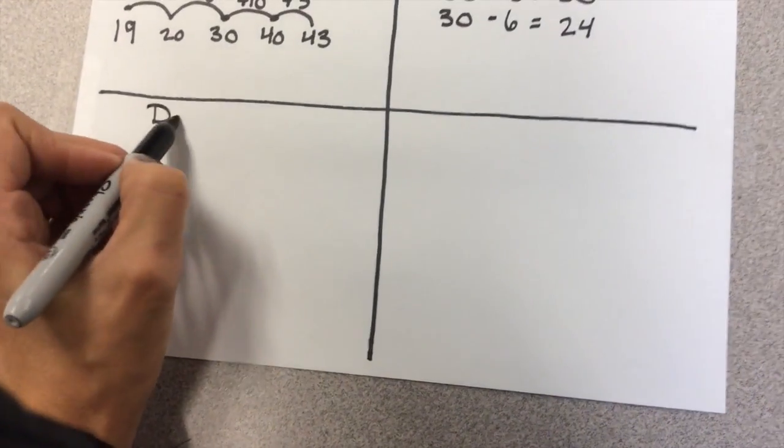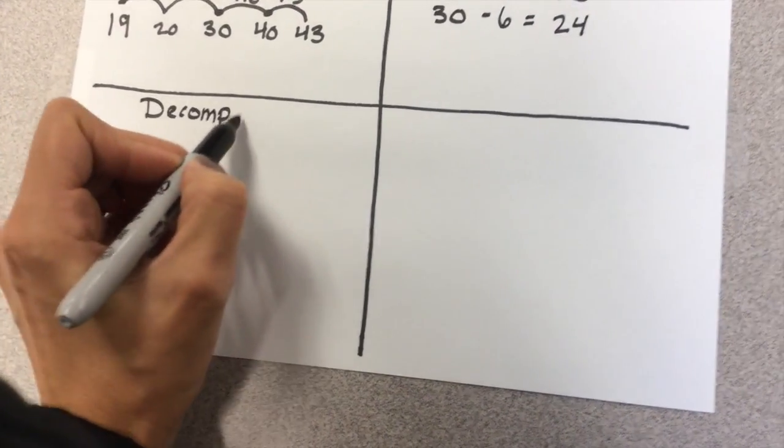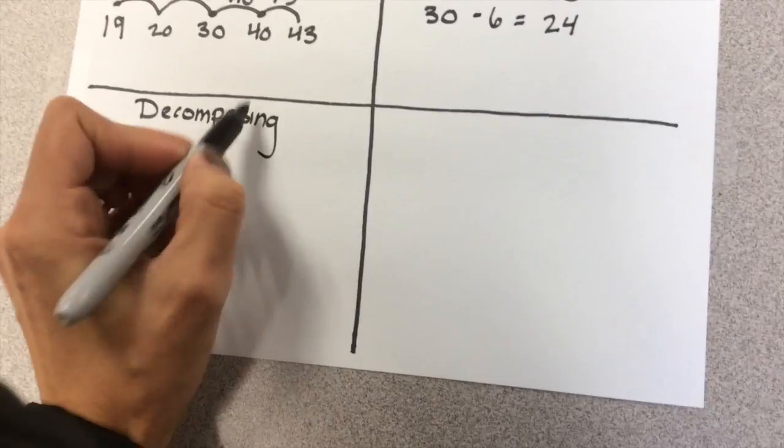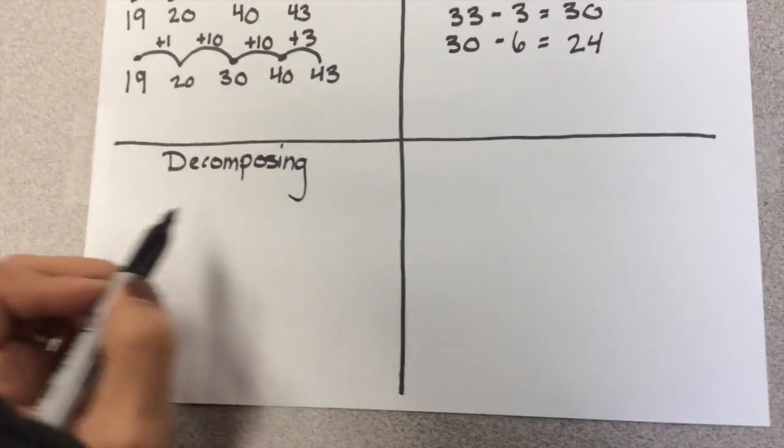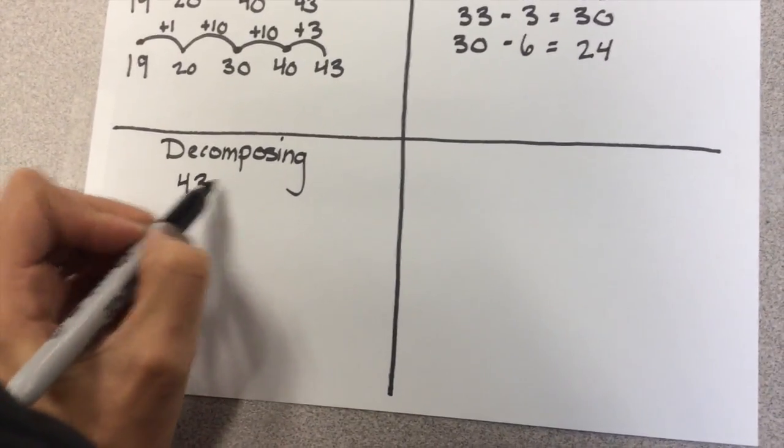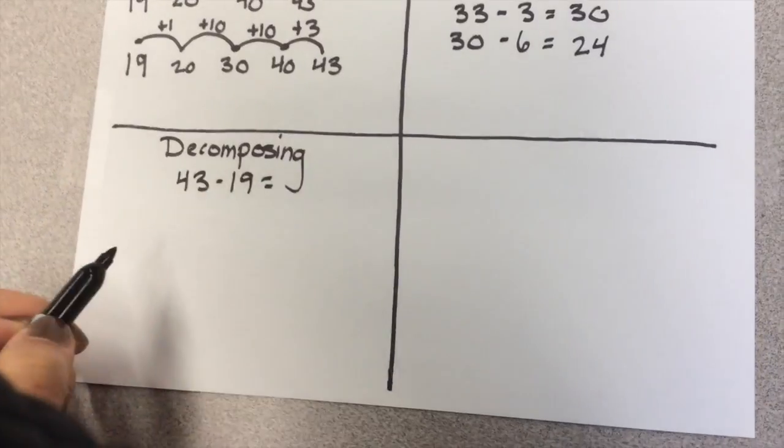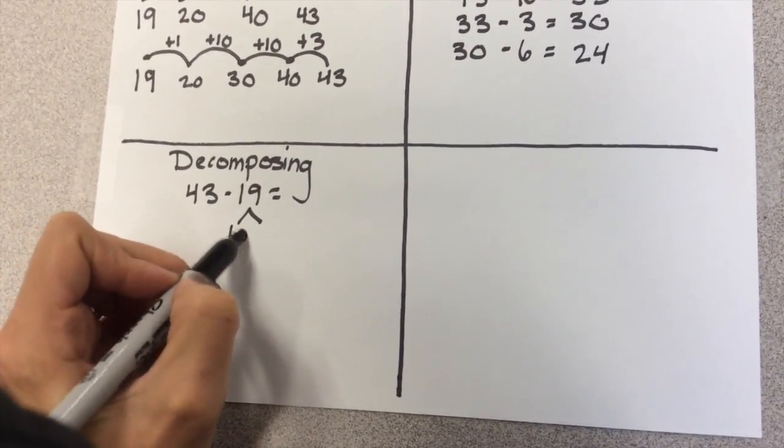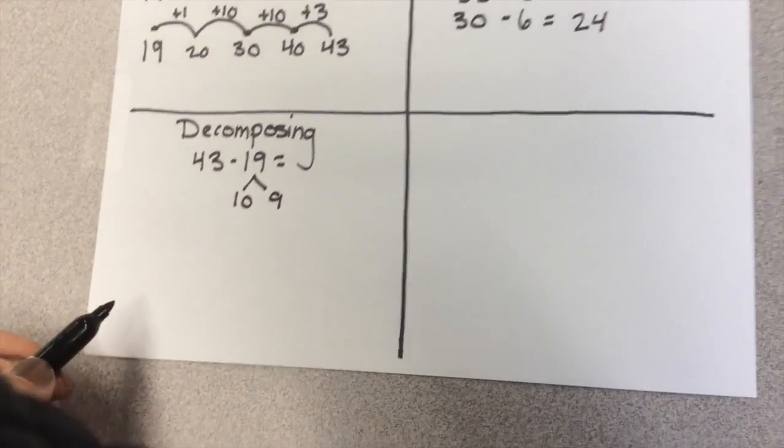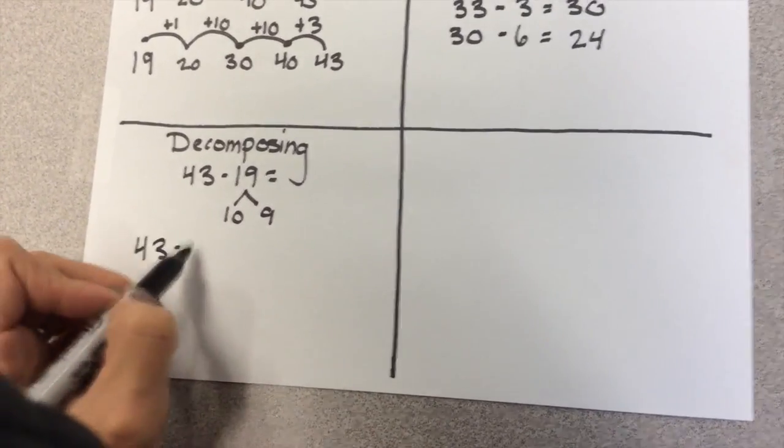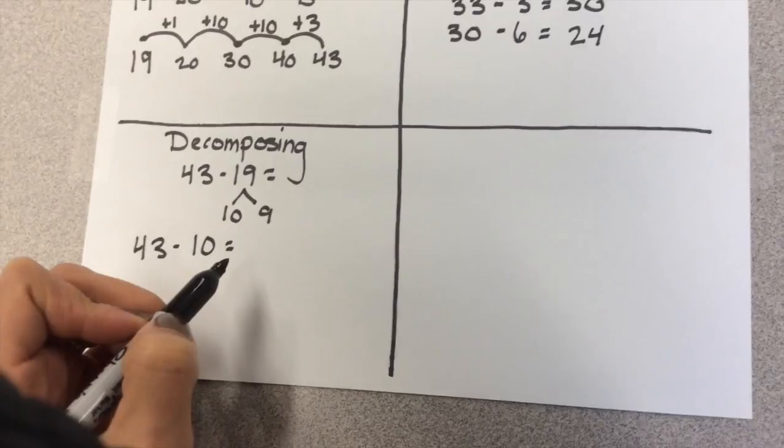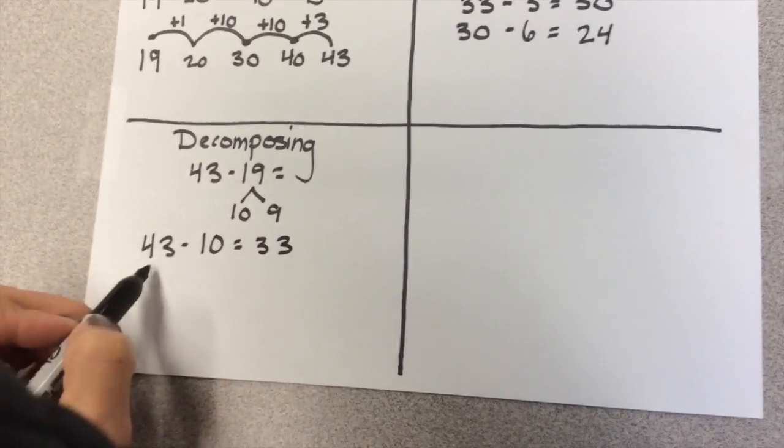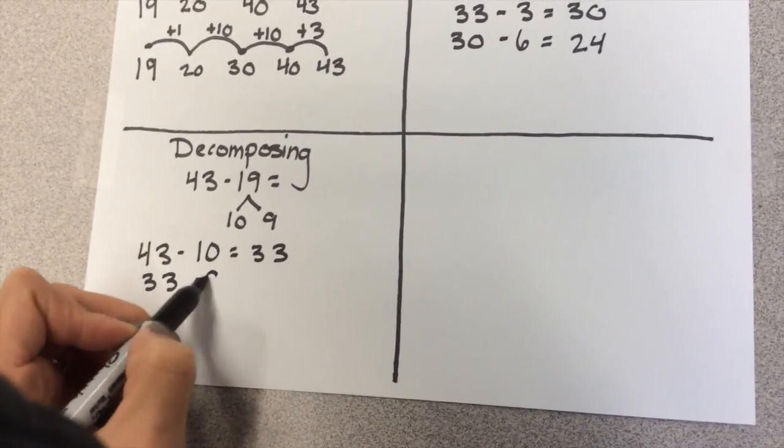The third strategy is called decomposing. When we add, we decompose both numbers, but when we subtract, we only decompose the number that we're subtracting. So we take 43 minus 10, and we get 33. And from 33 minus 9, some students will be able to count backwards 33 from 9.